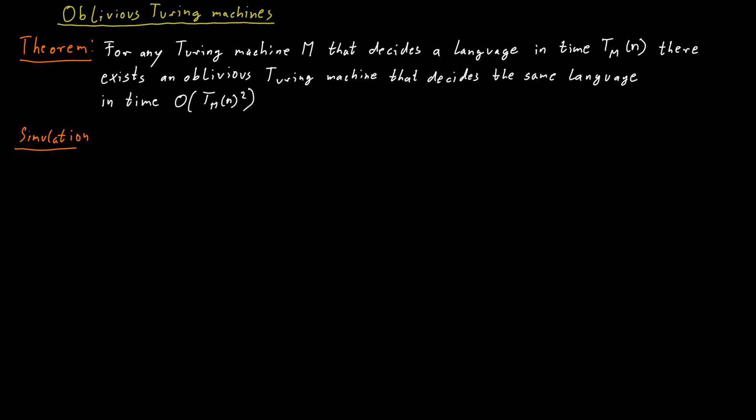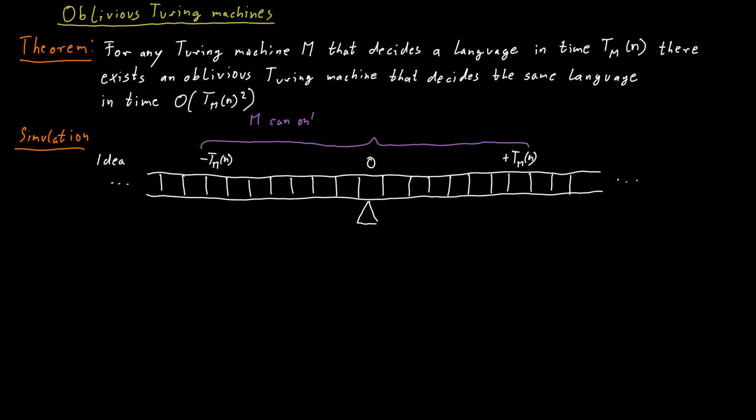Very roughly, the idea for the simulation is as follows. We look at the running time of the Turing machine M and that gives us a range on the tape that will be used. The Turing machine that has running time T_M(n) will never be able to visit any cell that is further than T_M(n) many positions away from the starting position. So there's a leftmost point of the tape that we could visit and a rightmost point of the tape that we could visit.